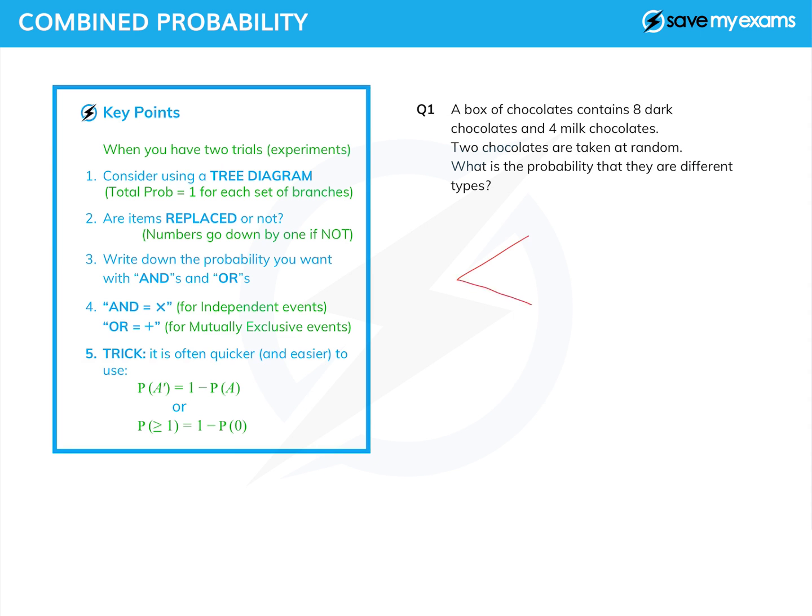We don't need a tree diagram necessarily, but we are going to draw one just to show you how they work. So first, chocolate can be dark or milk, and we put the probabilities on the branches. So the probability of a dark chocolate is eight out of 12, because there are eight dark chocolates and 12 chocolates in total. And then the probability of a milk chocolate is four out of 12.